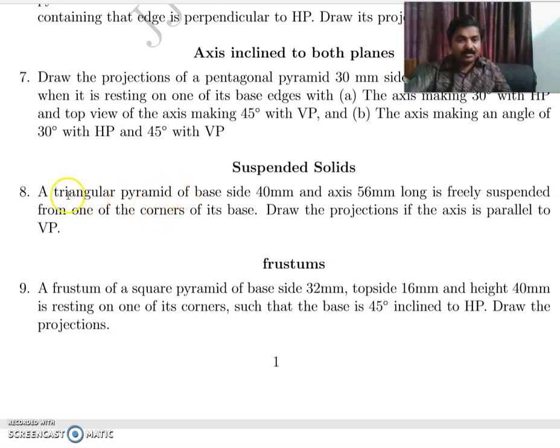Suspended solids. Question number 8. A triangular pyramid of base side 40mm and axis 56mm long is freely suspended from one of the corners of its base. Draw the projections if the axis is parallel to VP.